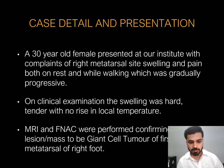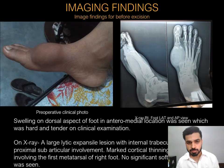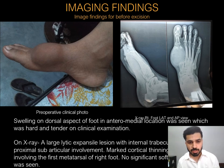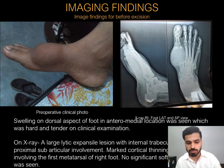MRI and FNAC were performed confirming the lesion to be GCT of the first metatarsal of the right foot. Moving to the imaging findings, a pre-operative clinical photo shows a large swelling on the dorsal aspect of the foot medially. On X-ray, a large lytic expansile lesion with internal trabeculations and proximal sub-articular involvement is seen. Marked cortical thinning was noted involving the first metatarsal of the right foot, with no significant soft tissue swelling on the radiograph.